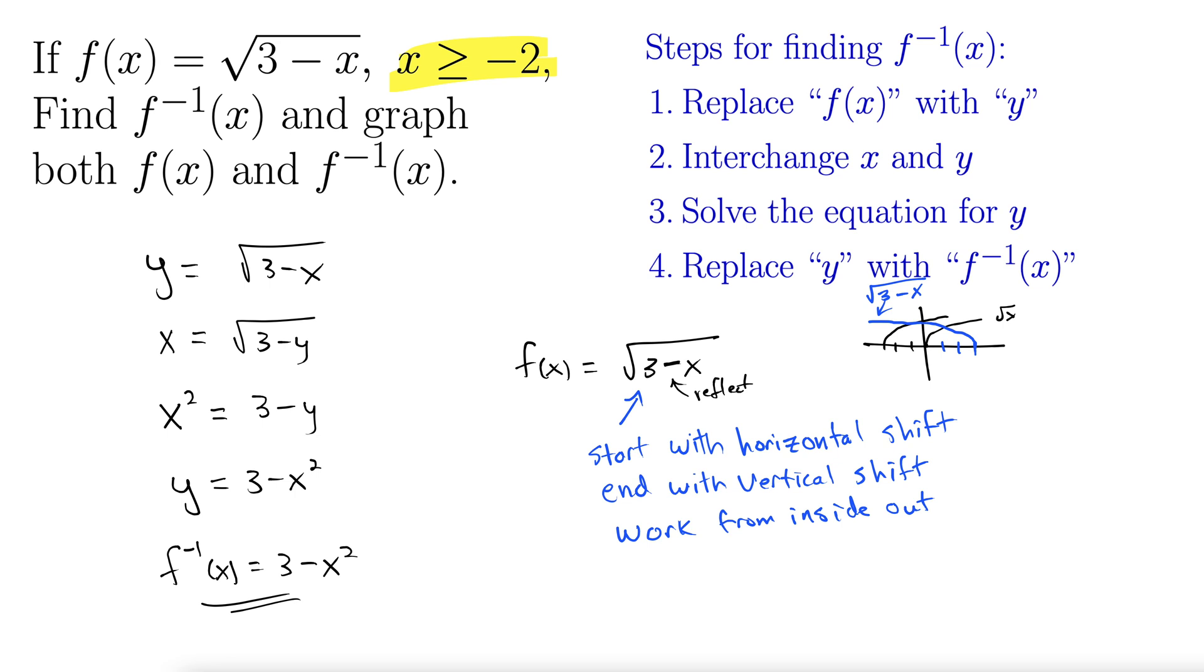If x is greater than or equal to negative 2, let's see the maximum that this function could be. If we put in negative 2 here, we'd have square root of 5. When we examine this square root function, we could say that y is going to be, well the smallest it can be is 0.